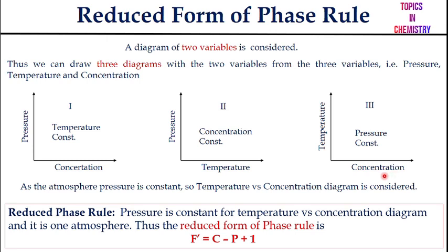Two-component systems consist of solid and liquid phases. Changing pressure produces very little effect, so pressure remains almost constant. This leads to the reduced phase rule. Since pressure is constant for the temperature-concentration diagram at one atmosphere, we use the reduced form: F′ = C − P + 1, obtained by subtracting one from the standard phase rule F = C − P + 2.